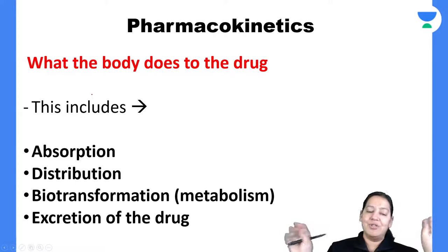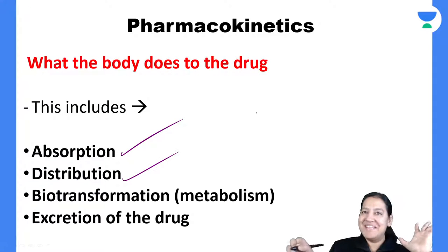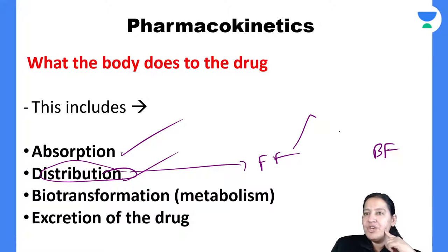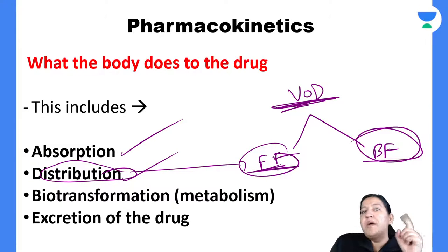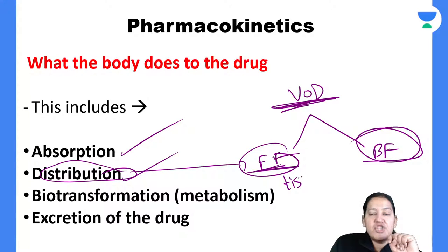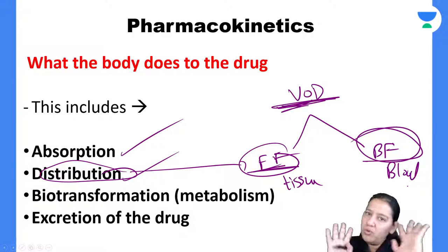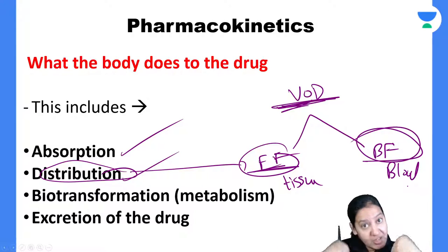I cannot simplify it more than this. You know the formula of volume of distribution and can do numericals also. That is the gist of the chapter. Let me now move to the third chapter: biotransformation or metabolism. Are you people ready? Get set, go.